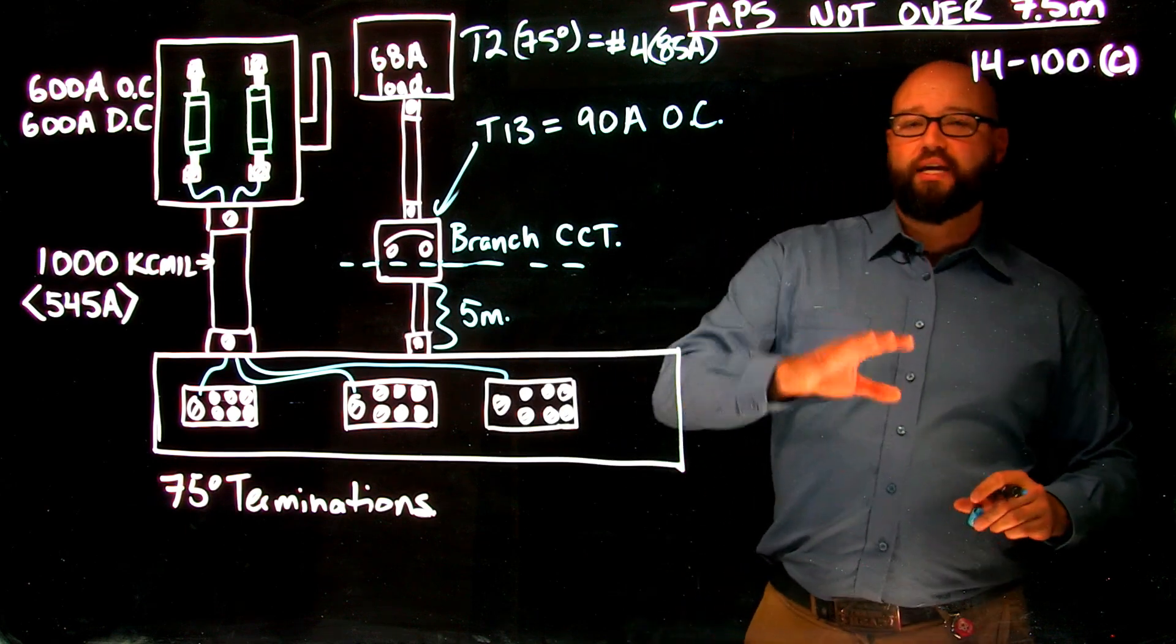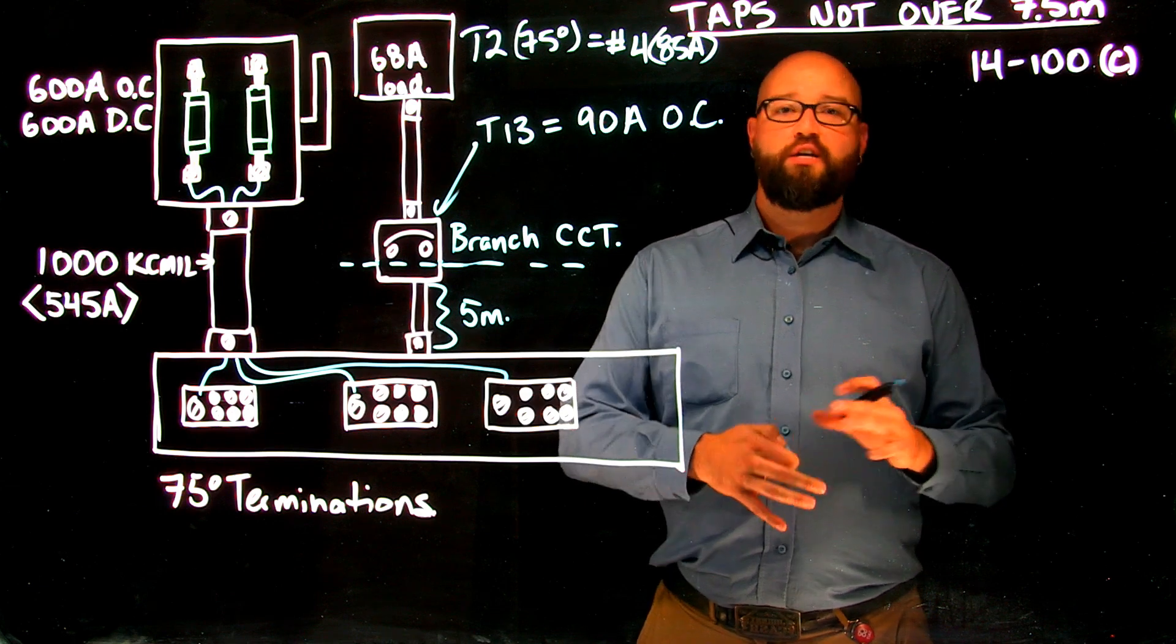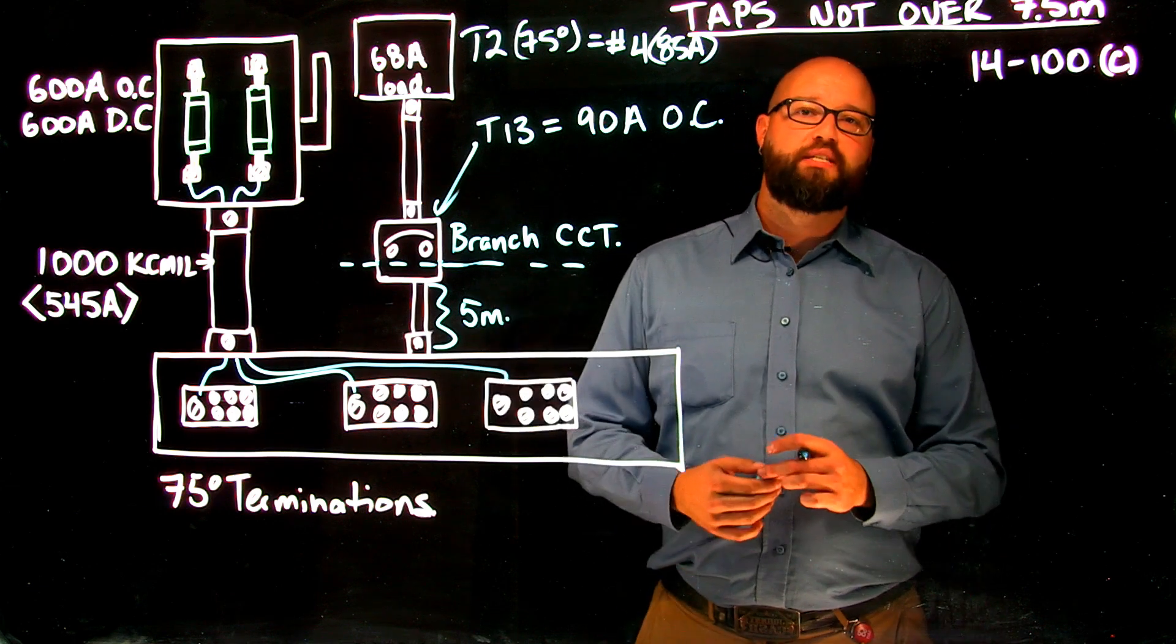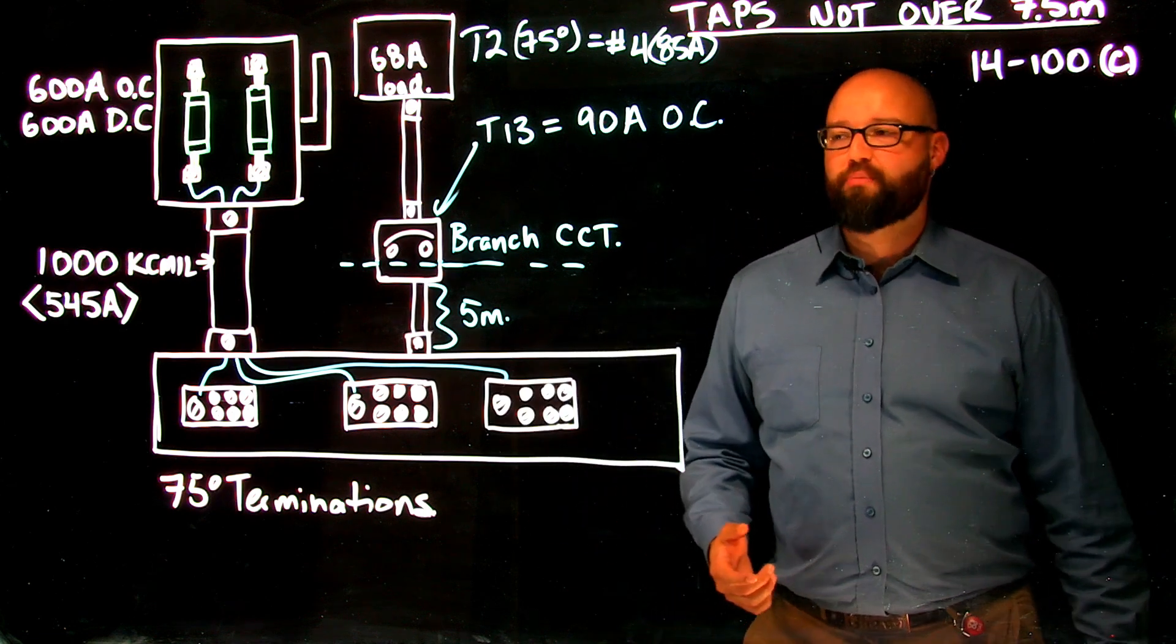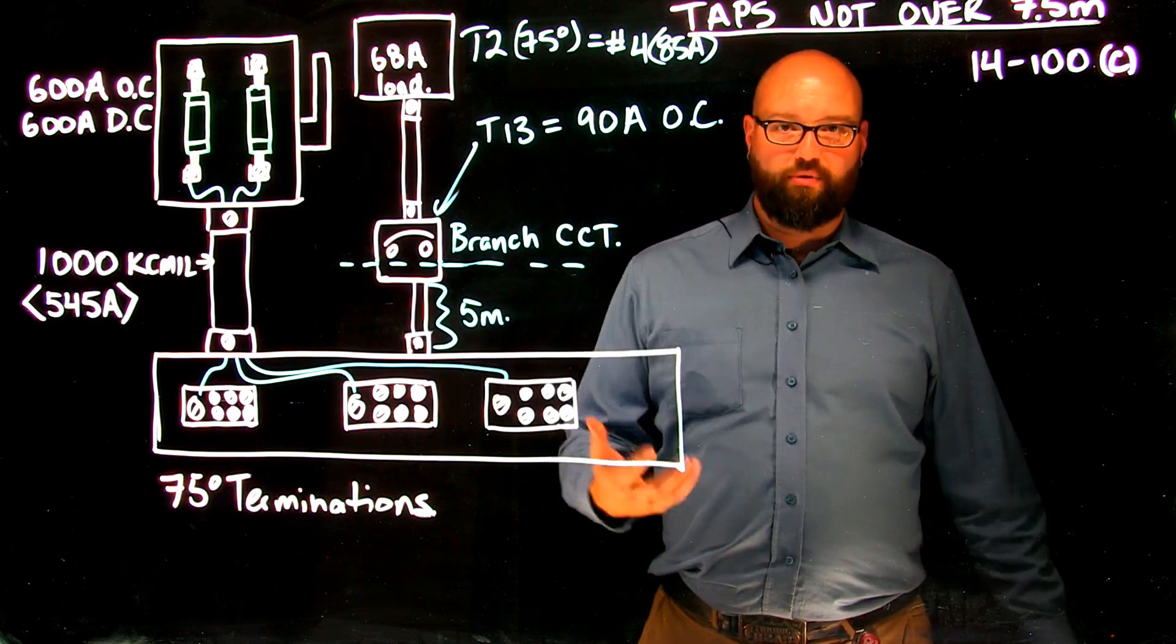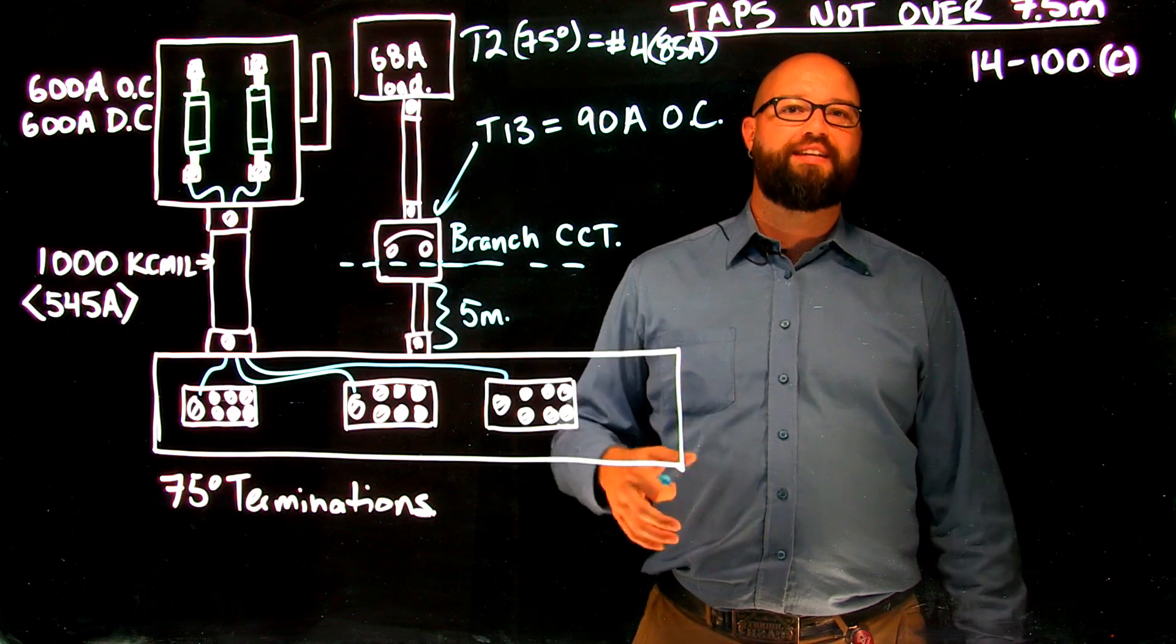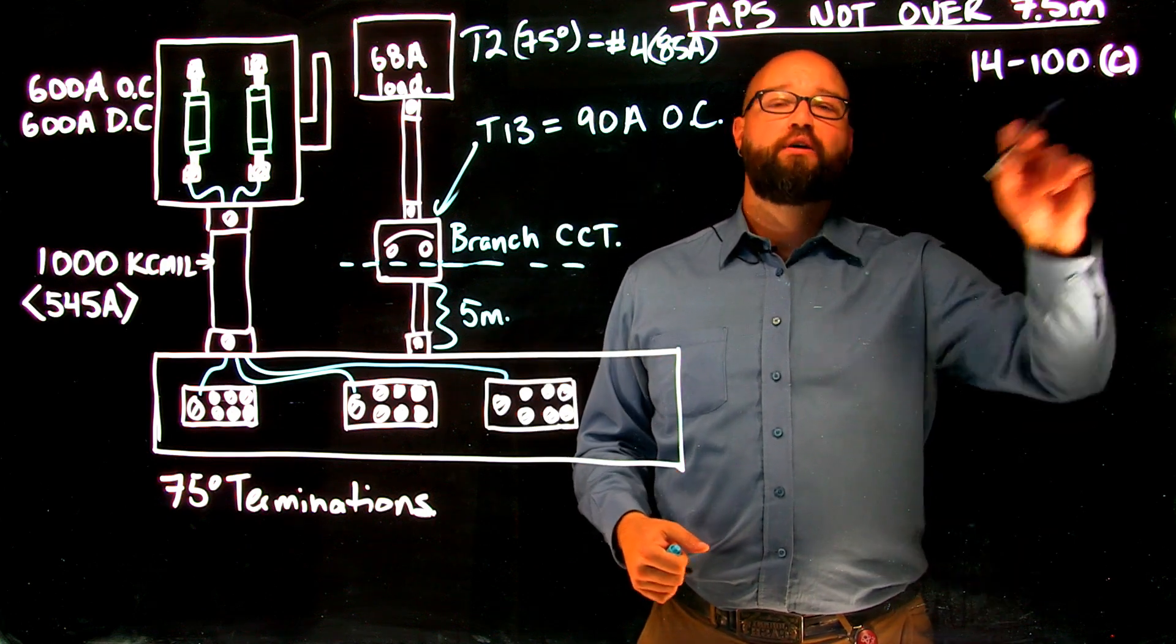So when we take a look at 14100C, what it tells us is this. Just like in 14100B, when I calculate the size of my tap conductor, I need to keep in mind my tap conductor has to have an ampacity greater than the overcurrent that it supplies. So in this case a 90 amp overcurrent, I would require a tap conductor that is at least 90 amps. So that's kind of the first choice that we have from item C.